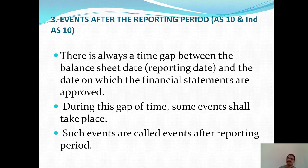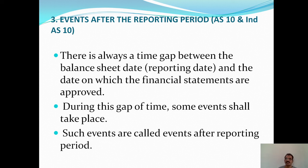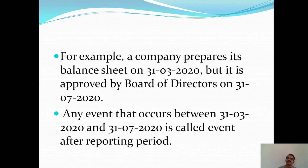During this gap of time, some events shall take place. Such events are called Events After the Reporting Period — events that take place between the balance sheet date and the date on which financial statements are approved. For example, a company prepares its balance sheet on 31st March 2020 but it is approved by the board of directors on 31st July 2020 — that is a four-month gap: April, May, June, and July.